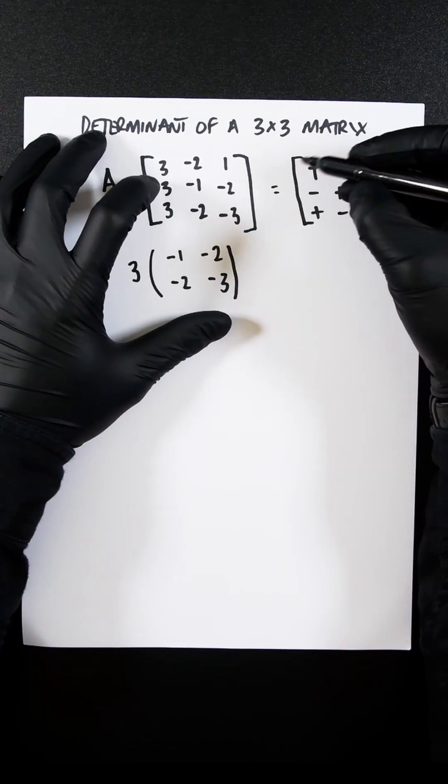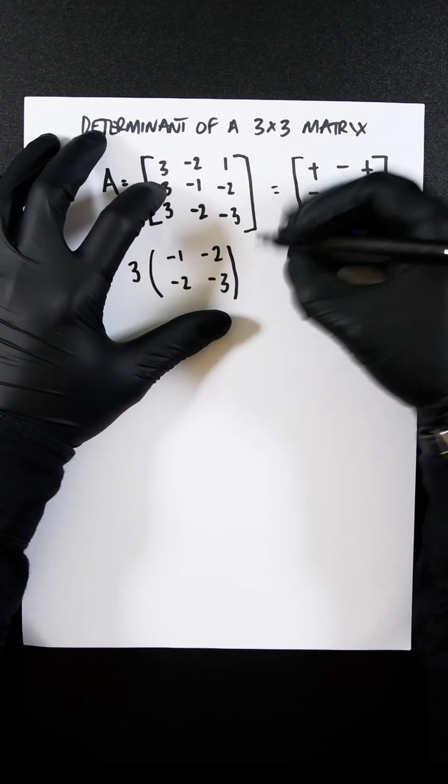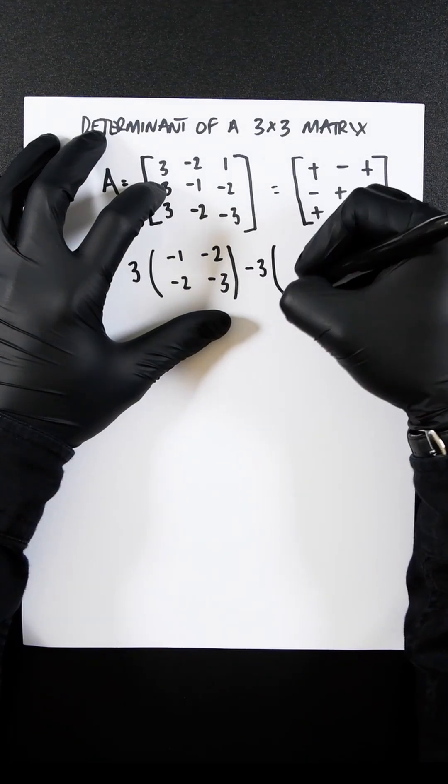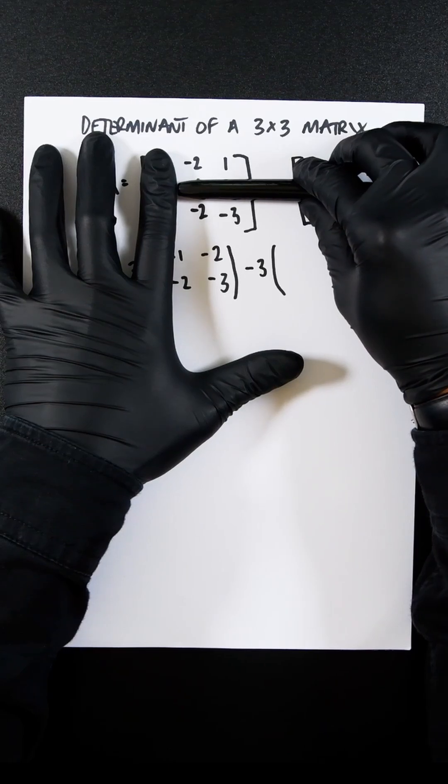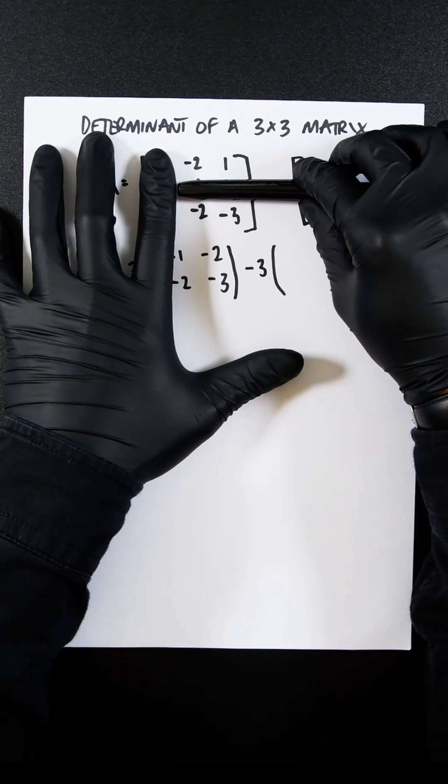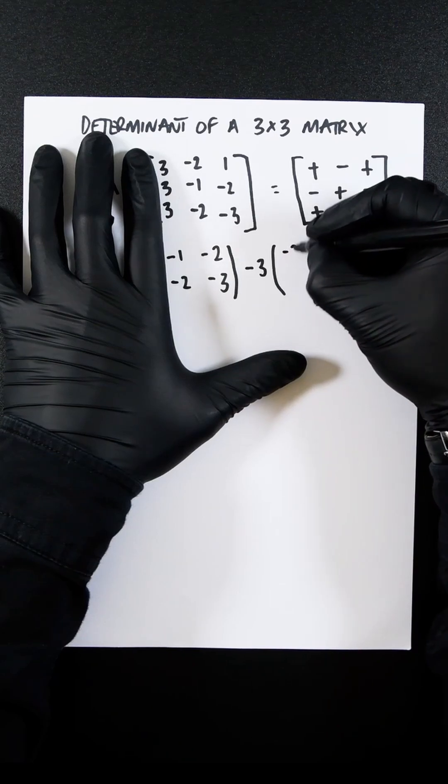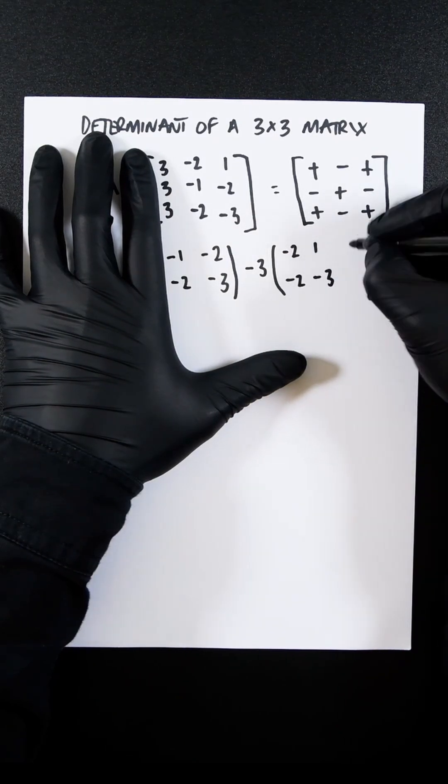We'll now go to the next one. This is 3, but here it's negative, so it'll be minus 3. And everything here gets ruled out, and everything here does. So we just have that minus 2, 1, minus 2, minus 3. So it'll go minus 2, 1, minus 2, minus 3.